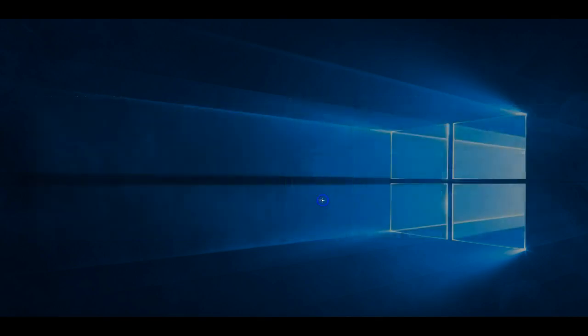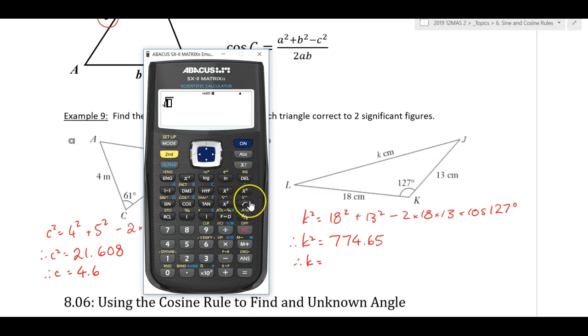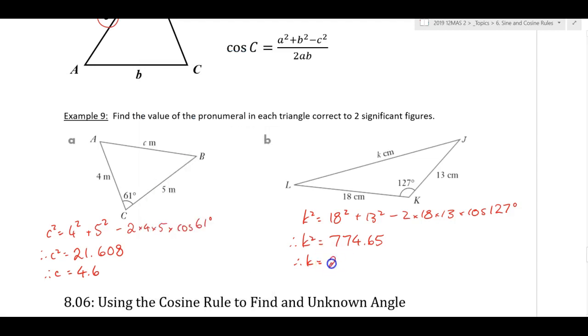K equals... Now, don't round that off. Leave it on your screen. You can round it off when you write it down, of course, but... Don't ever put a rounded-off answer into your calculator. 27. And it says two significant figures, so that's going to be 28. K equals 28. Two significant figures.